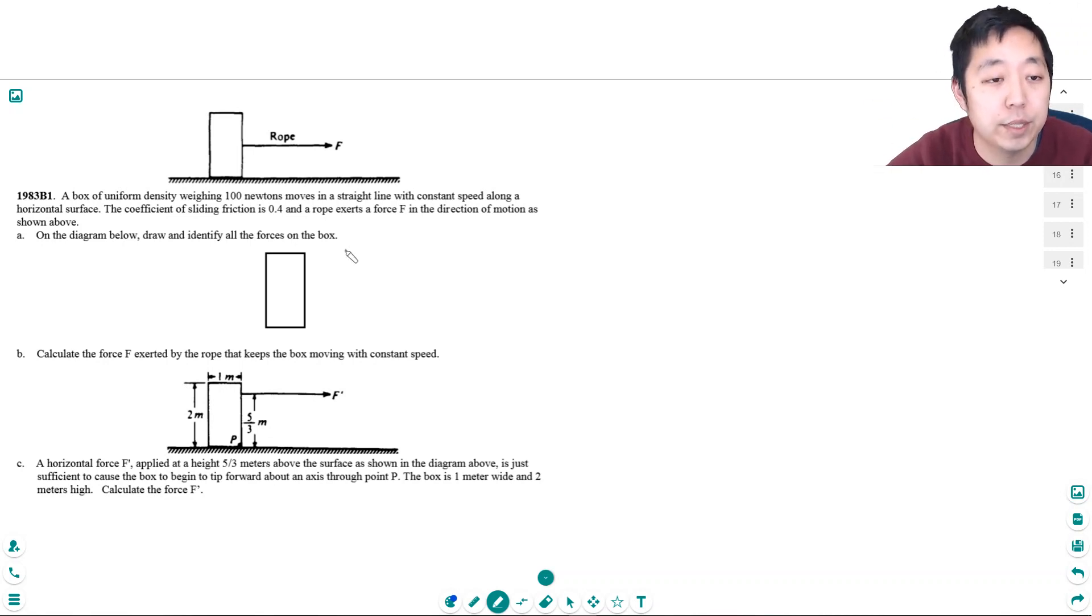A box of uniform density weighing 100 newtons moves in a straight line with constant speed along a horizontal surface. The coefficient of sliding friction is 0.4, and the rope exerts a force F in the direction of motion as shown above. On the diagram below, draw and identify all the forces on the box. Well, I have F going horizontal, I got gravity 100 newtons going down, I got a normal force, and then I also have friction acting down here.